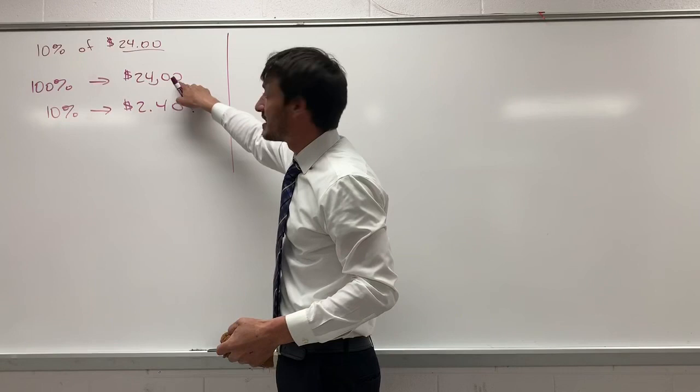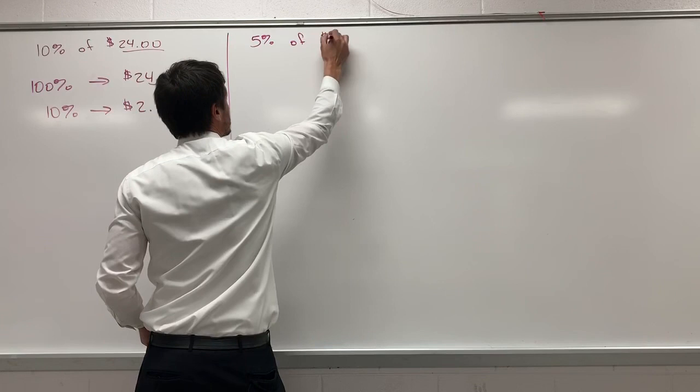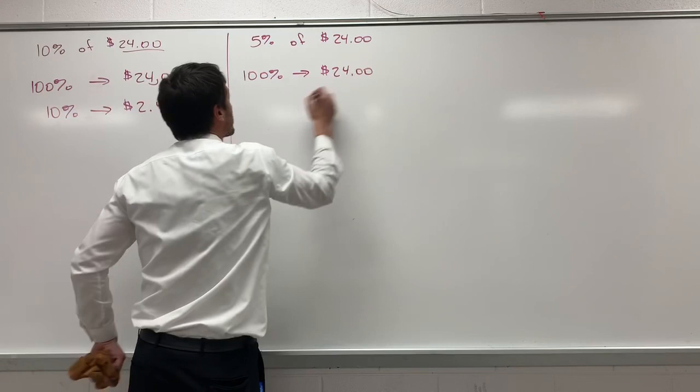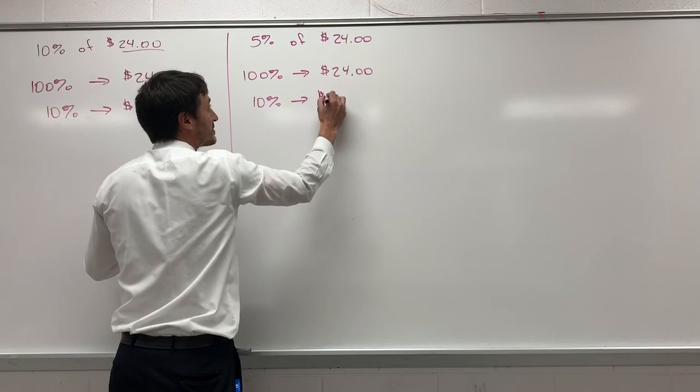Next, we need to find 5% of $24. It's very similar to the last calculation. Let's consider 100% of the total cost of the item to be $24. First, we find 10%, and 10%, like we did in the last problem, is to move the decimal one place, so we get $2.40.